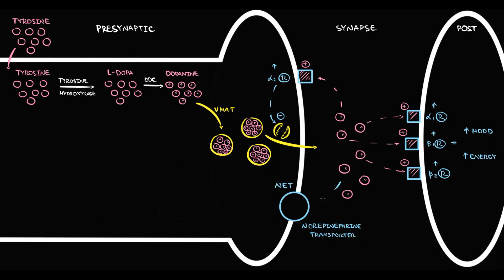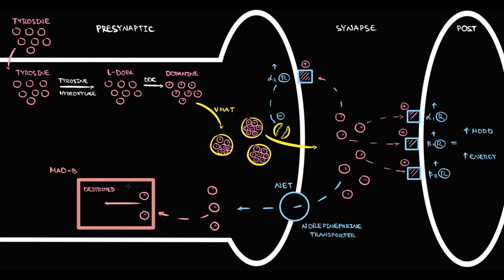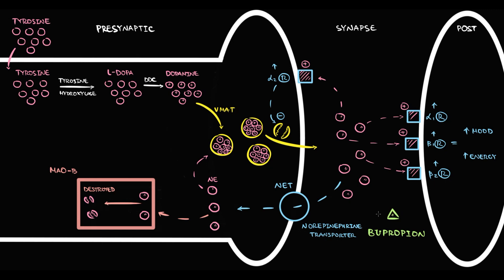Norepinephrine molecules that did not have time to bind to any receptor are taken up by the norepinephrine transporter called NET. This transporter uptakes norepinephrine molecules and delivers them back to the presynaptic neuron, where monoamine oxidase B is waiting for them. Most of the delivered norepinephrine molecules are taken up and destroyed by monoamine oxidase, but some norepinephrine molecules are able to slip away and re-enter the vesicles, thereby replenishing the norepinephrine pool.